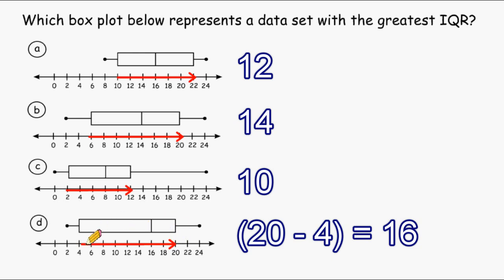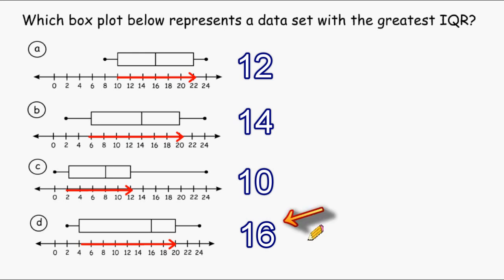And 20 take away 4 is 16. So out of the four box plots, box plot D has the greatest IQR at 16.